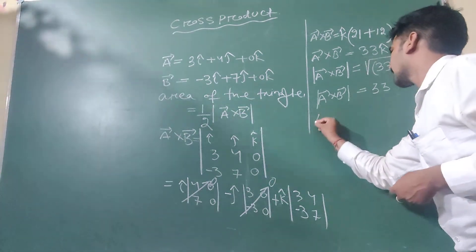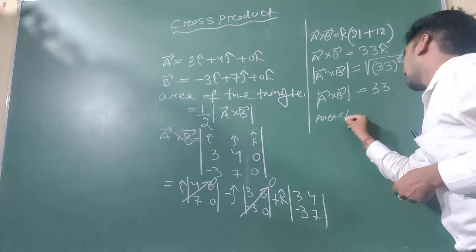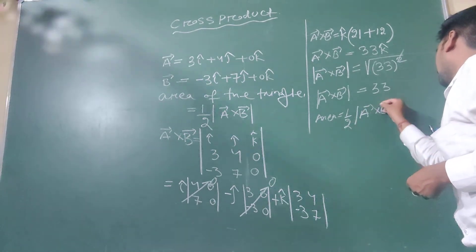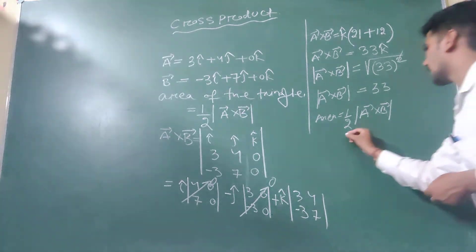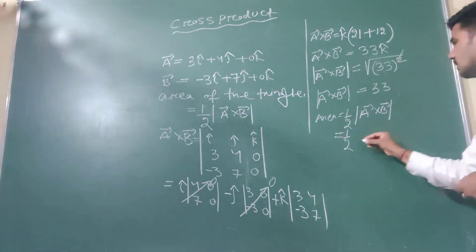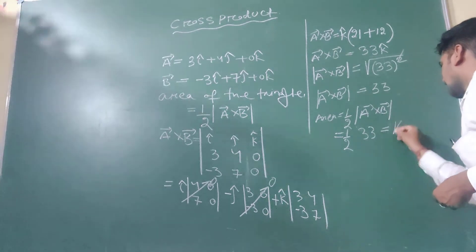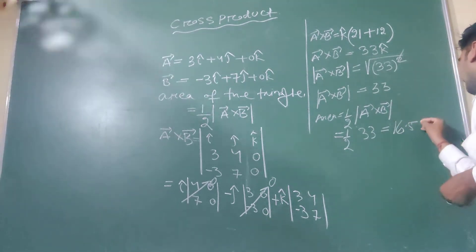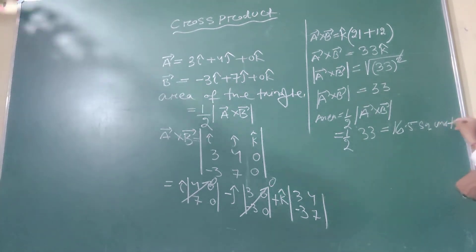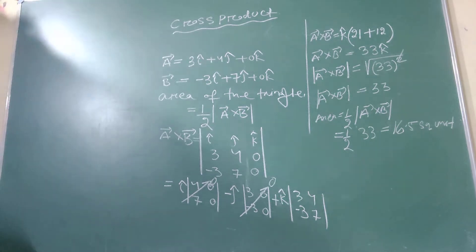So the formula for area is half into the magnitude of A vector cross B vector, which equals half into 33. Your answer is 16.5 square units.